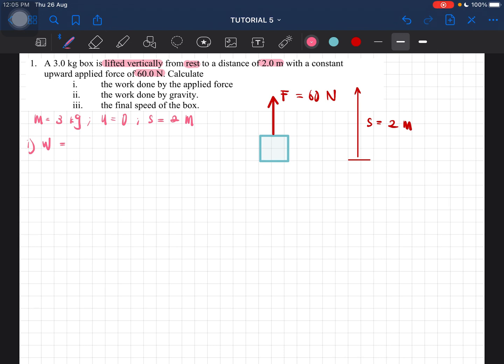So the value of force is 60 times displacement 2 times cos 0 degrees. You will then get the work done by the applied force to be equal to 120 joules.